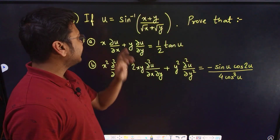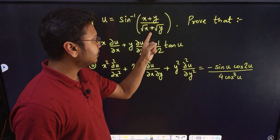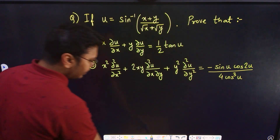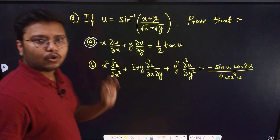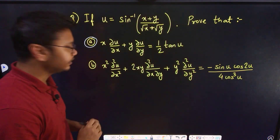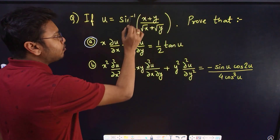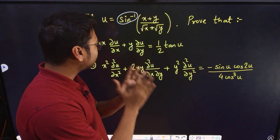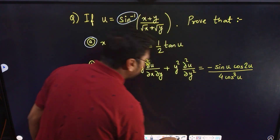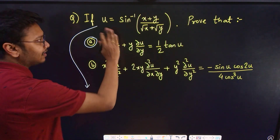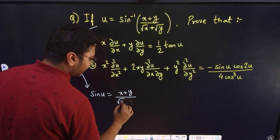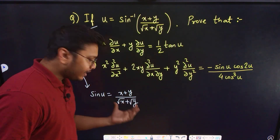Let's look at this question: given that u = sin⁻¹[(x+y)/(√x + √y)], we need to prove two expressions. The first expression is a direct outcome of Euler's theorem. To apply Euler's theorem, I want to avoid dealing with the inverse trigonometry directly, so I take sine on both sides: sin u = (x+y)/(√x + √y).